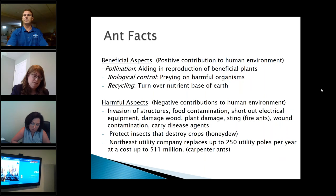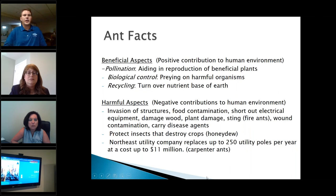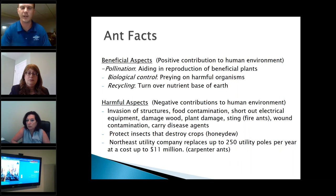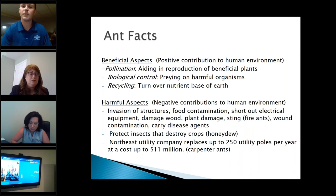Beneficial aspects of ants: they aid in pollination and the reproduction of beneficial plants, biological control by preying on harmful organisms, and recycling by turning over nutrients in the earth. Of course, there are harmful aspects too. They are invasive to structures, can contaminate food, can short out electricity by getting into outlets, can damage wood — specifically carpenter ants — can damage plants, fire ants are capable of stinging, and they can even carry disease agents. Northeast Utility Company replaces up to 250 utility poles a year at a cost of $11 million because of carpenter ant damage.